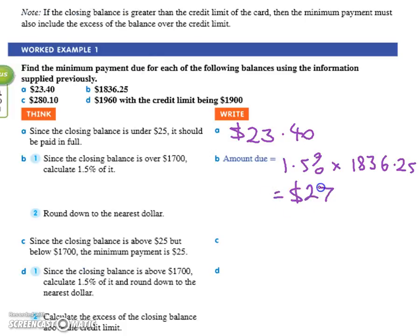Twenty-seven fifty-four. Now, can someone with a calculator find one point five percent of seventeen hundred dollars? Just do one point five percent times seventeen hundred. You didn't do one point five percent — you did one point five times.